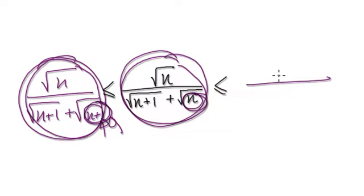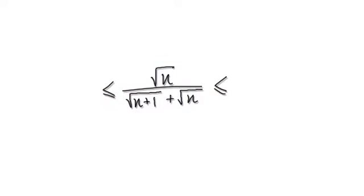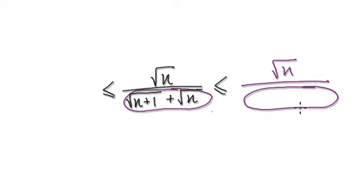So now use the same technique for the right-hand side. This thing here — if we can make the denominator here smaller than this denominator here, then this overall fraction here would be bigger than this fraction here.